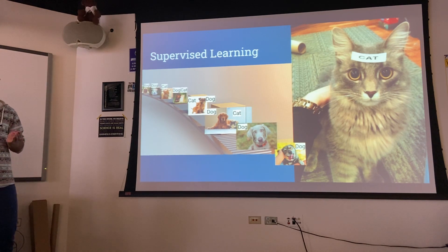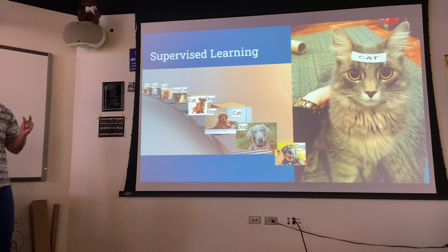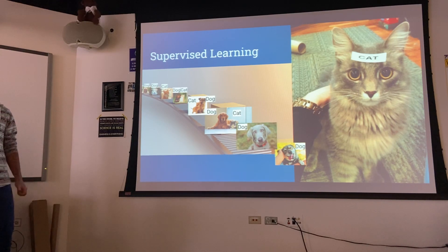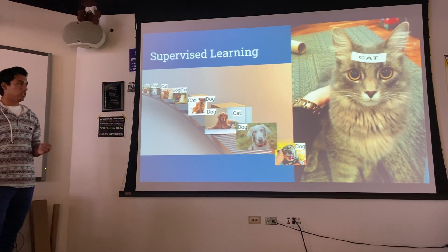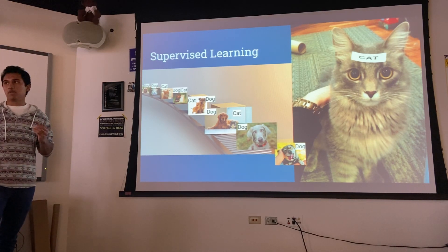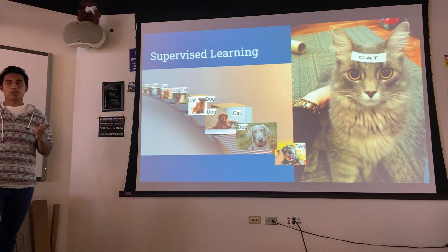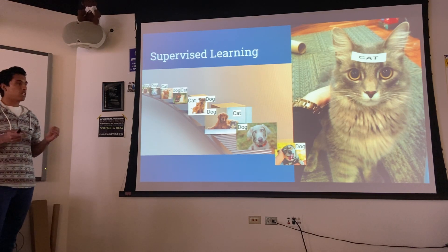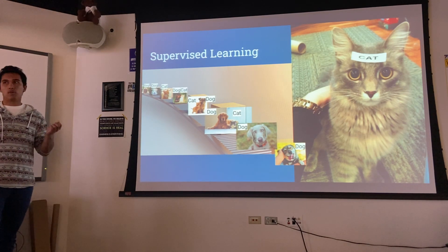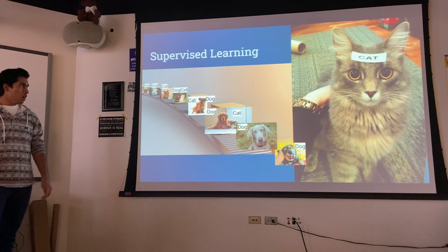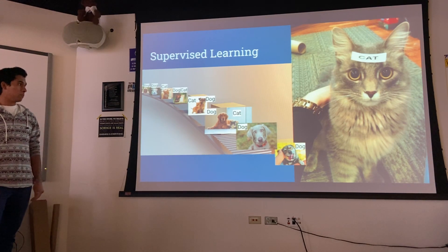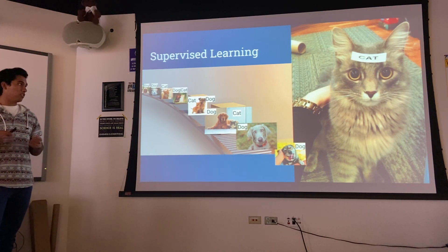That's exactly what we do with neural networks. We see an image of a cat with a label on top that says 'cat.' The neural network sees the image and is given a label — a number identifier that says this is a cat. We feed the neural network a large dataset of labeled images.